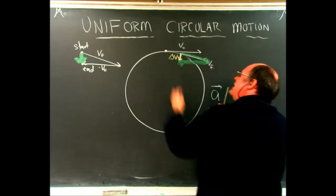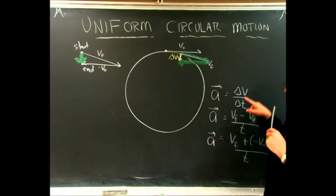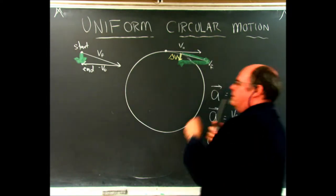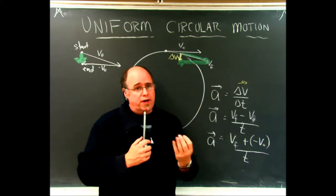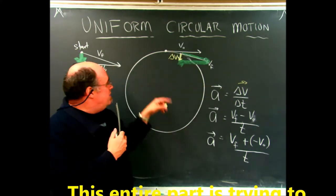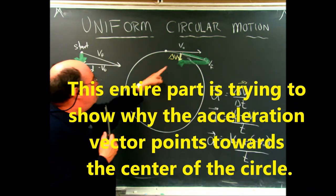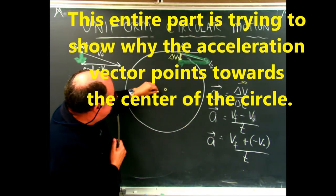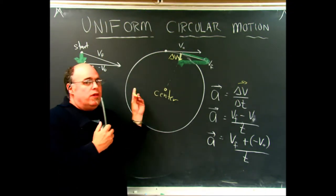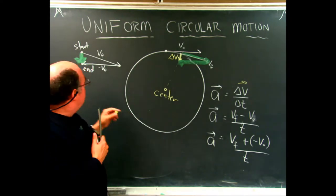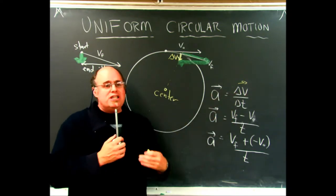Delta-v is a vector, and a vector has a direction. The acceleration is a vector based on delta-v, so they both point in the same direction. What I'm showing is that as we go around in a circular pattern, the change in velocity from one small moment of time to the next is pointing basically towards the center. So when we talk about circular motion, there will be an acceleration — called centripetal — because we are talking about a change in the velocity vector.